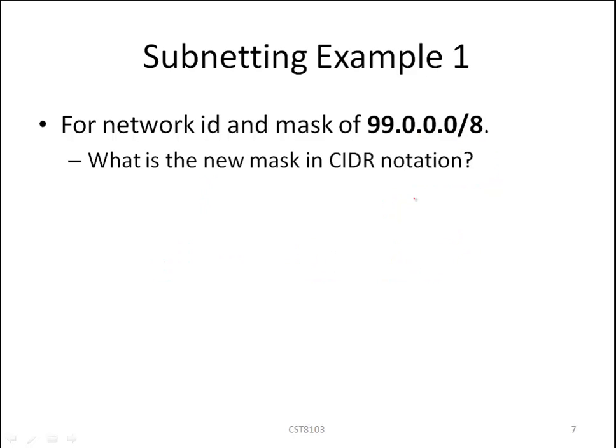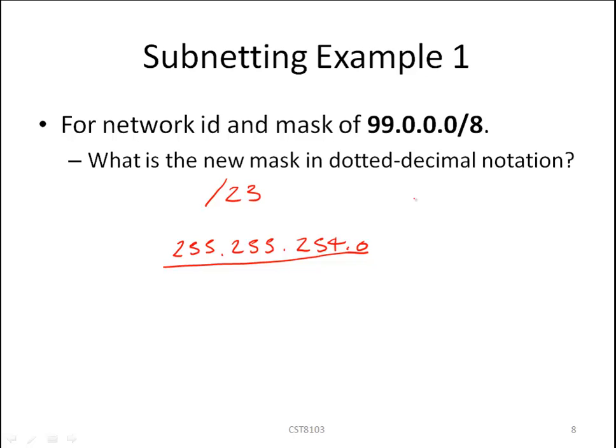What is the new mask in CIDR notation? Well we've already calculated that two slides ago. It's a slash 23 and a slash 23 converted to dotted decimal is as calculated a few slides ago 255.255.254.0.